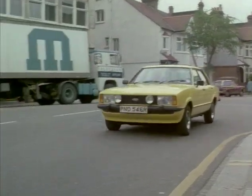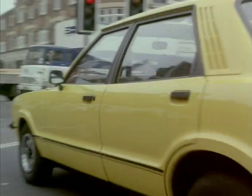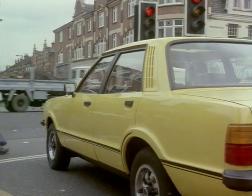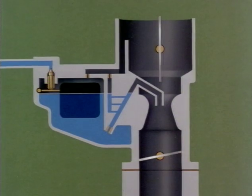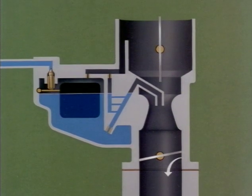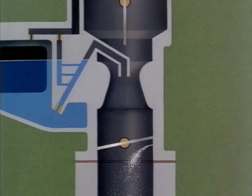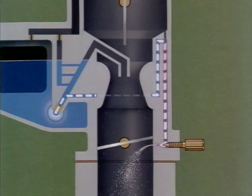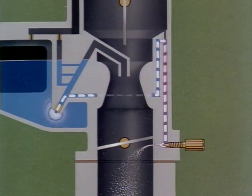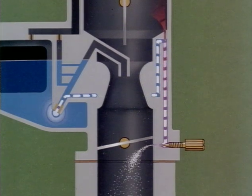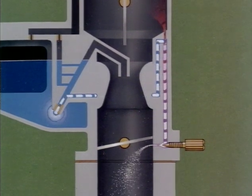At normal idling speed, the airflow is not strong enough to pull sufficient fuel into the venturi to keep the engine running. To do this, a small amount of petrol is injected into the side of the throttle nearest the engine. This is the idling jet. Petrol is delivered from the float chamber, air is drawn from the upper part of the venturi, and sufficient mixture is provided for the engine to idle.